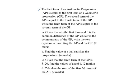Question number 17. The first term of an arithmetic progression, AP, is equal to the first term of a geometric progression, GP. The second term of the AP is equal to the fourth term of the GP, while the tenth term of the AP is equal to the seventh term of the GP. Part A: given that A is the first term and D is the common difference of the AP, while R is the common ratio of the GP, write the two equations connecting AP and GP.